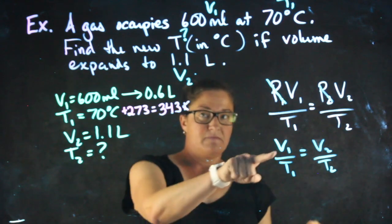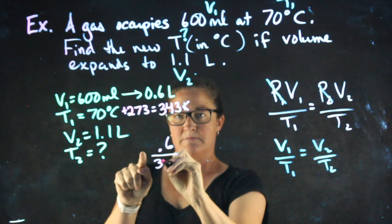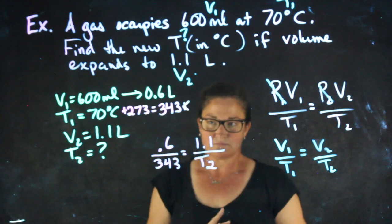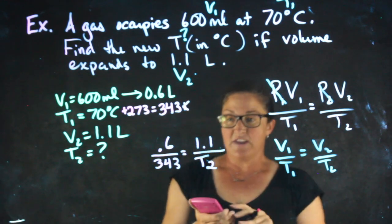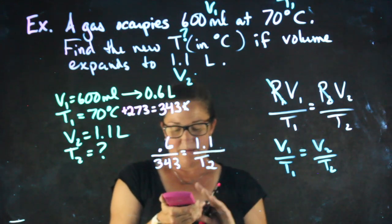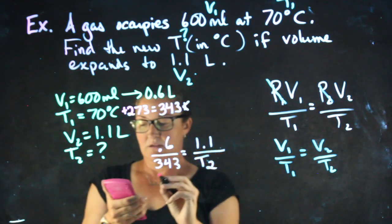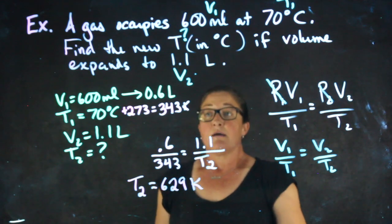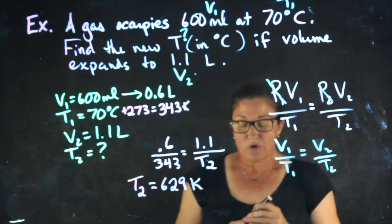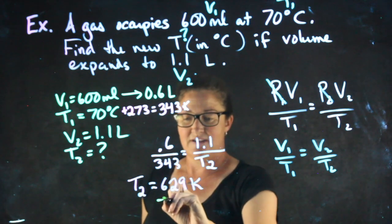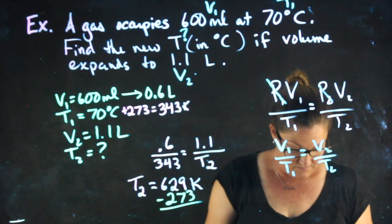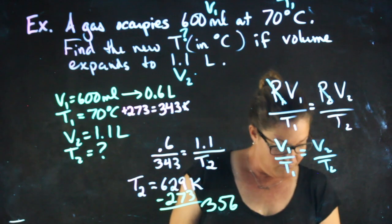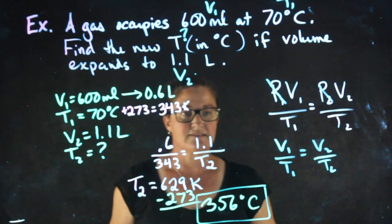Now I'm ready to plug in. V1 over T1 equals V2 over T2. To solve this, 1.1 times 343 divided by 0.6 gives me T2 to be 629 Kelvin. I was asked to find it in Celsius. So in order to convert it back to Celsius, I need to subtract 273 from it, giving me 356 degrees Celsius as my answer.